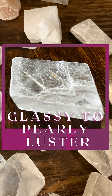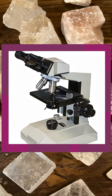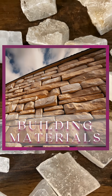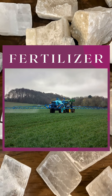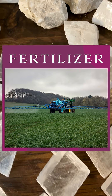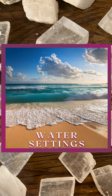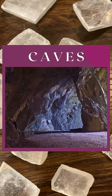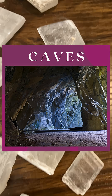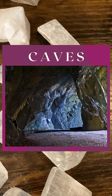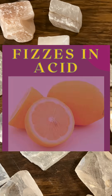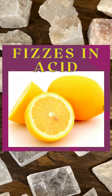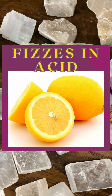Calcite is used in the chemical industry and in the manufacture of microscopes, building materials, and fertilizers. Calcite forms in water environments and in caves, and all calcite is made of calcium carbonate and will fizz if you drop it in an acid like hydrochloric, lemon juice, or even vinegar.